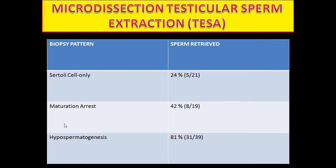One study showing biopsy pattern and sperm retrieval rates: sperm is retrieved in 24% of Sertoli cell-only syndrome cases, 42% in maturation arrest, 81% in hypospermatogenesis, and 100% in obstructive azoospermia.